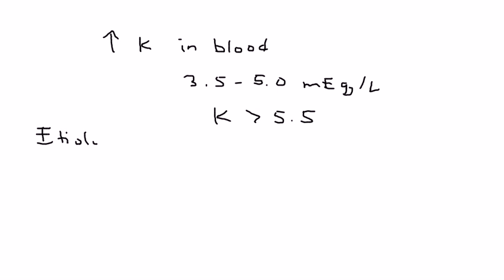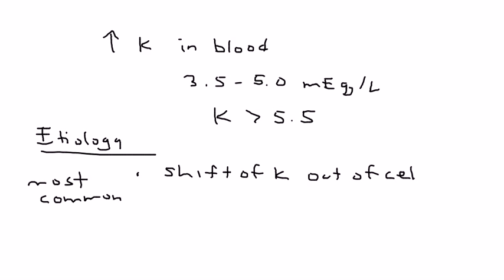In terms of cause, you're looking at three possible scenarios. The first one, which is the most common scenario of why someone gets hyperkalemia, is because of something called shift of potassium out of the cells into the blood.